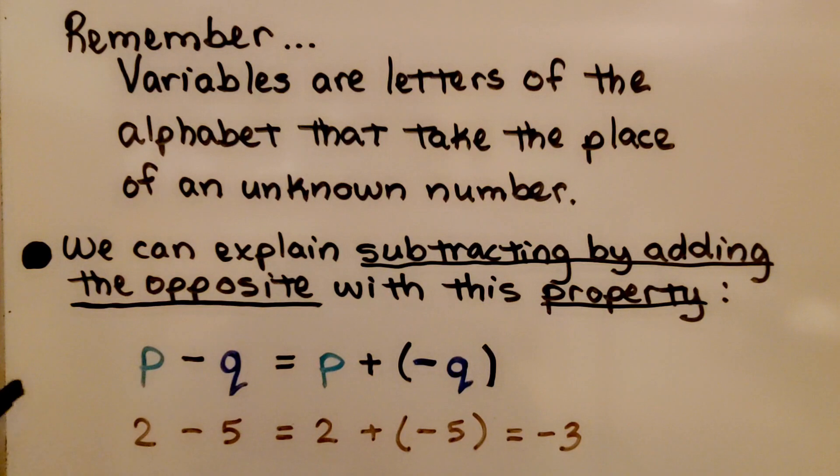We can explain subtracting by adding the opposite with this property. We've got p minus q and it's equal to p plus a negative q. If we put in some numbers, we could say 2 minus 5 is equal to 2 plus a negative 5. That would give us a negative 3.